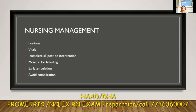Post-operative management: the first thing is positioning. After amputation, you need to give the patient a stump elevated position — not foot and elevated position — to control bleeding. To control bleeding, you can also keep a tourniquet near the patient's bedside, and you need to closely observe signs of bleeding.